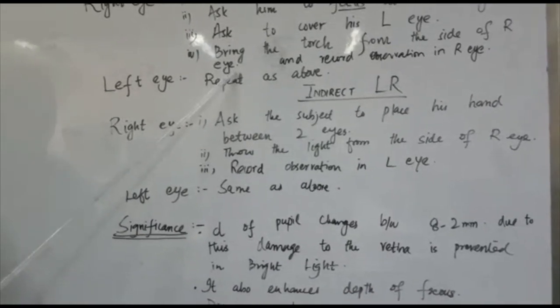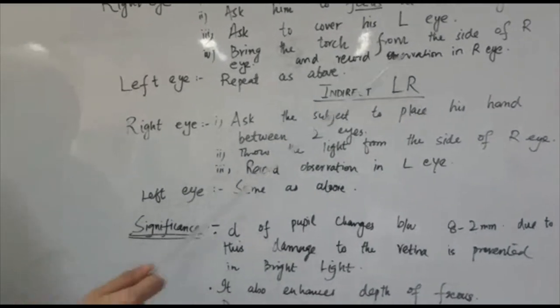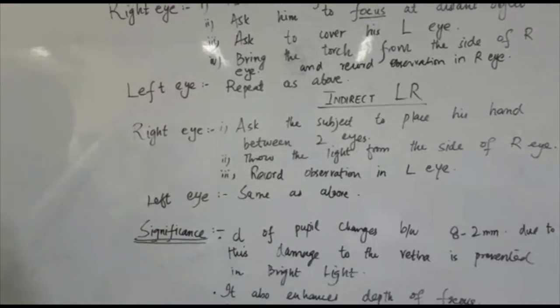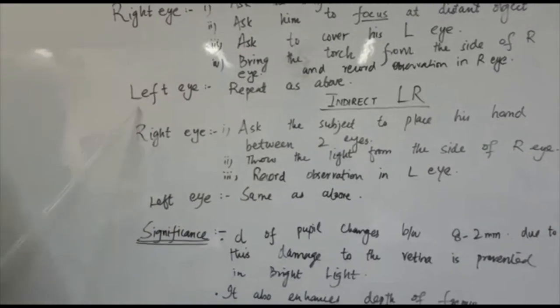Then bring the torch from the side of the right eye. Never bring the torch from the front. And then record your observation in the same eye. Same steps would be followed for the left eye.